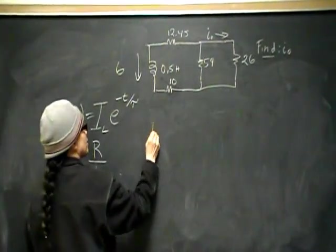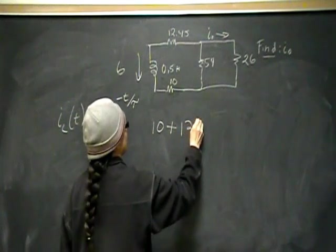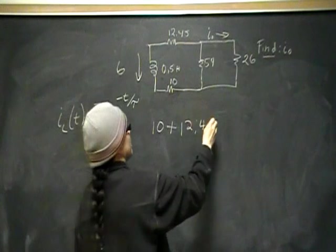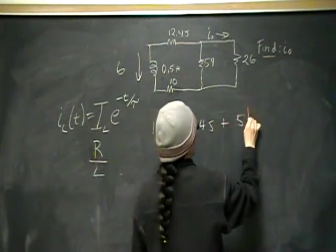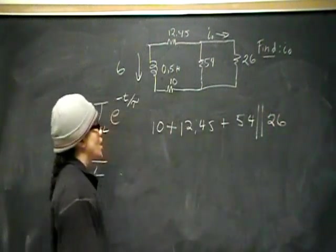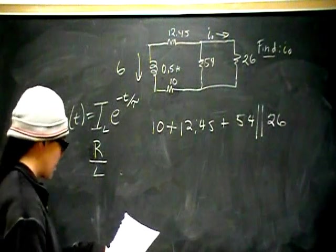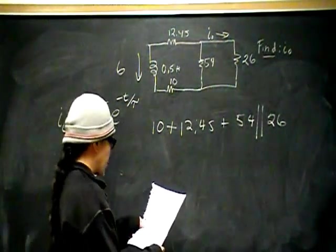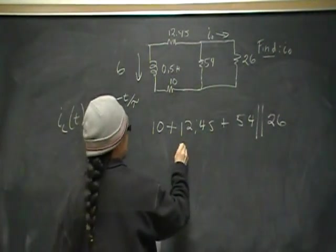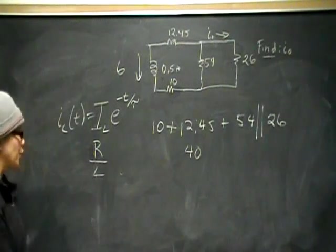So what does this inductor see? It sees these two first, right? So it sees 10 plus 12.45, and it sees that that is actually in series with 54, which is in parallel with 26. So when you put all that together, you should come up with that the R it sees is 40. So all of this simplifies into 40 ohms.